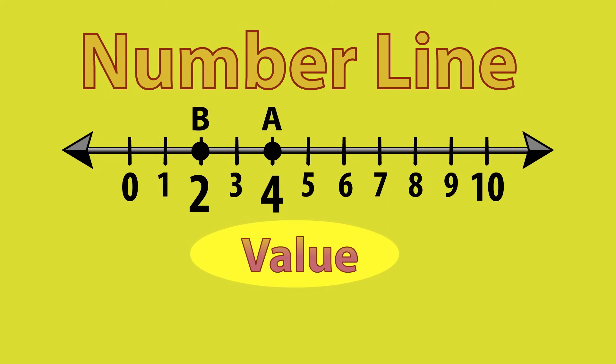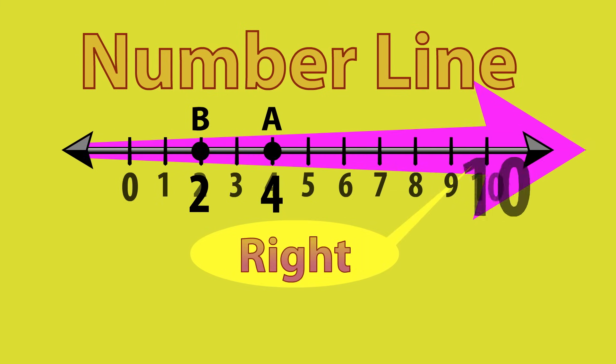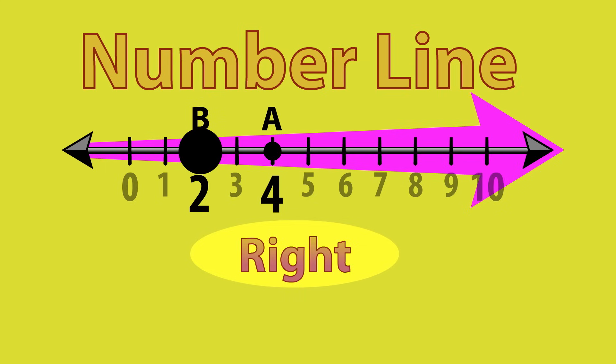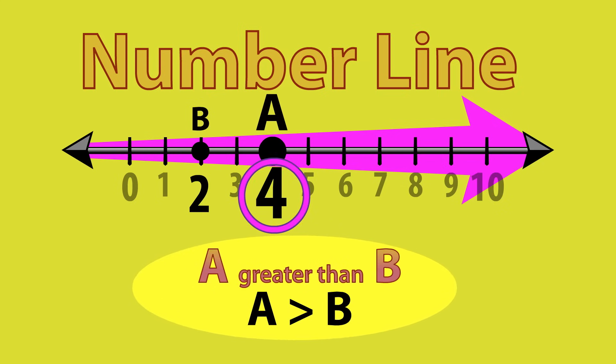Which is greater, point A or point B? Point A is to the right of point B, so point A is greater than point B.